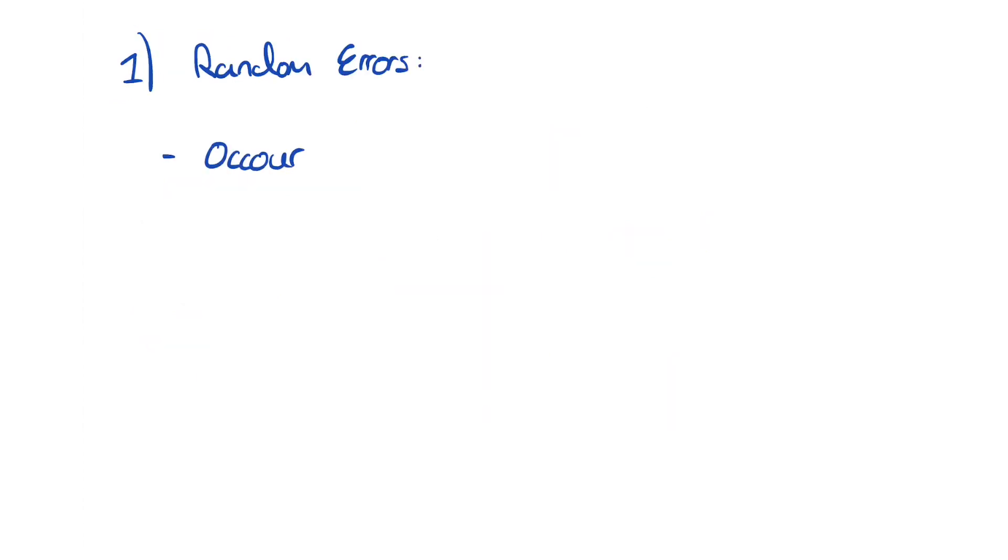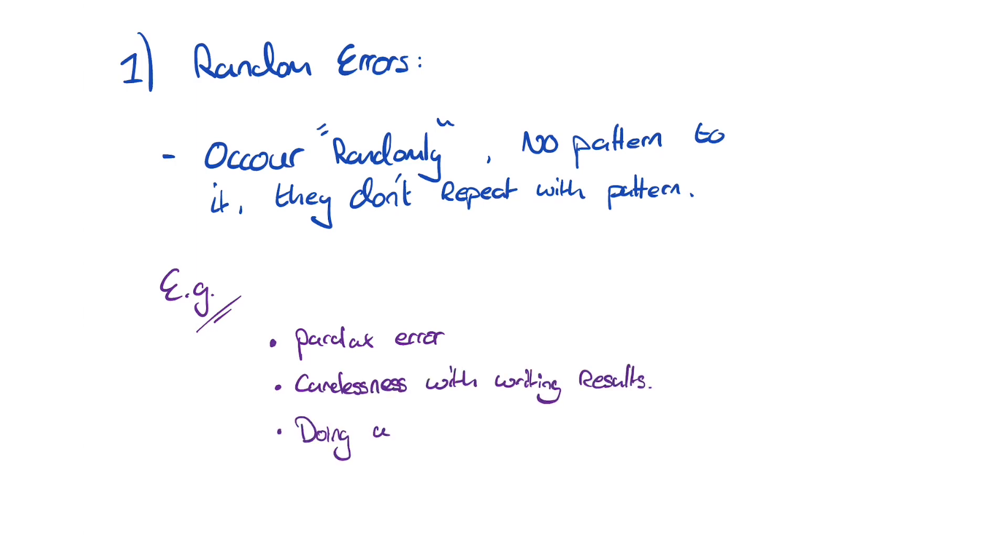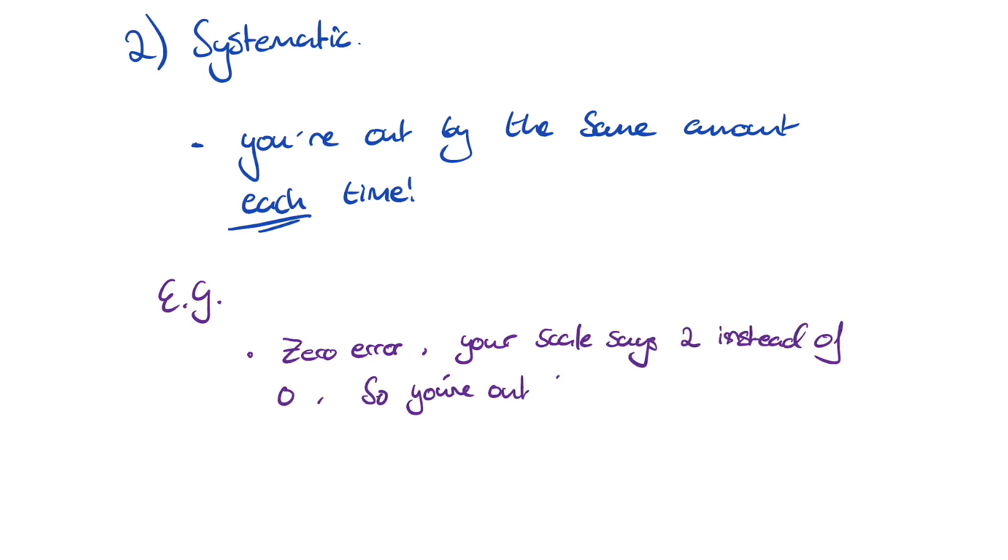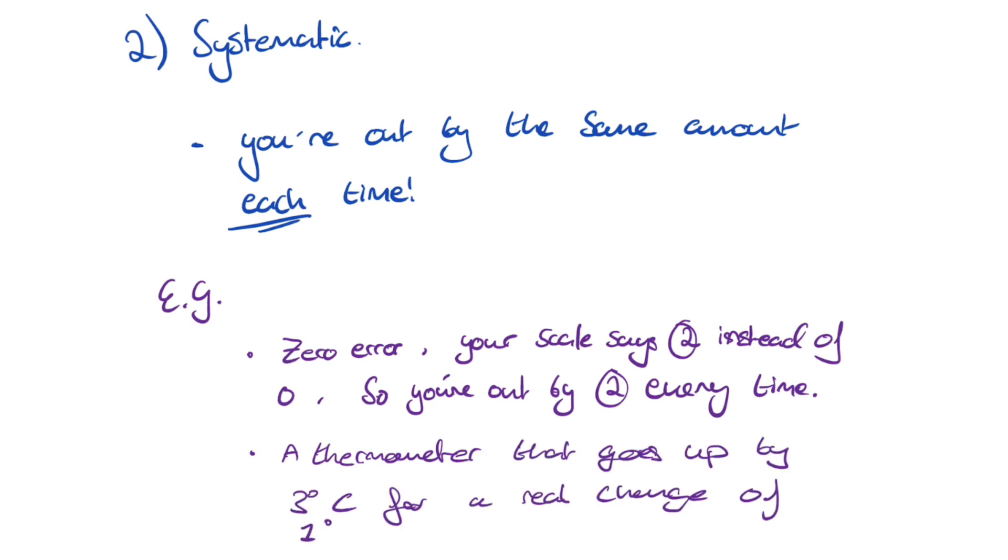Random errors occur occasionally and don't repeat. Some examples of random errors are parallax errors, careless in making readings or simply doing the experiment wrong. A systematic error repeats itself by the same amount each reading. Some examples are zero error in the experiment, so that's where the zero on your instrument isn't actually zero, inaccurately calibrated equipment or incorrect method all the way through.